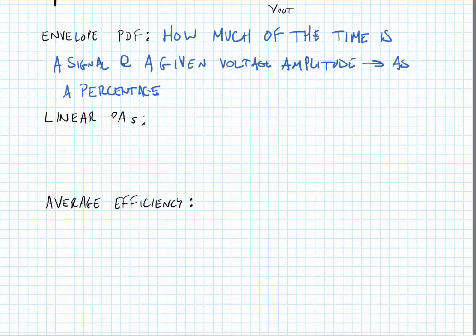Linear power amplifiers have poor efficiency because even for low output powers they dissipate static power. Typically, they're operating at relatively low output powers relative to their peak output power due to the signal envelope.